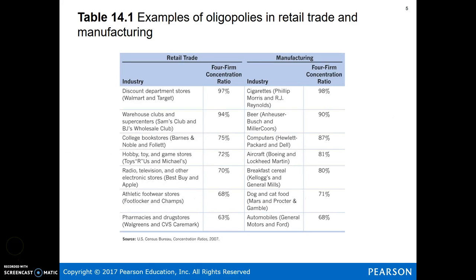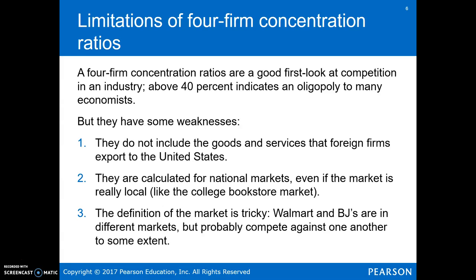Here are some examples of the four-firm concentration ratio — the sales of the top four firms as a percentage of the industry as a whole, with different industries labeled. Concentration ratios aren't perfect; they give us some general idea about where there might be an oligopoly, but there are weaknesses. They don't include exports from foreign countries to the United States. They're also calculated at the national level, so even if the market is local like the FSU bookstore, we're looking nationally. And defining the market within each industry is difficult — Walmart and BJ's or Costco aren't exactly in the same market, but they probably compete against each other to some extent.